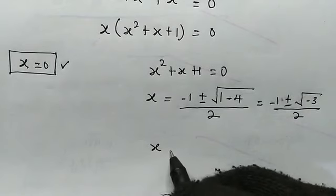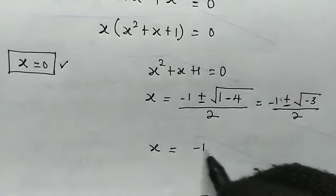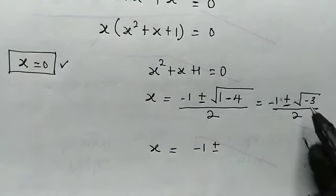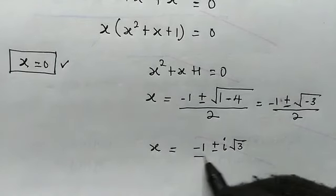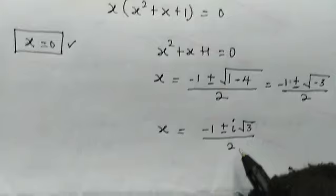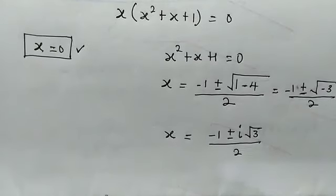Now simplifying, we get x is equal to negative 1, plus or minus, now here square root of negative 1 is iota, and we have root of 3, then divided by 2. Therefore, we have the following solutions for x.